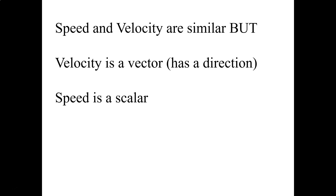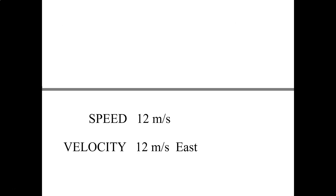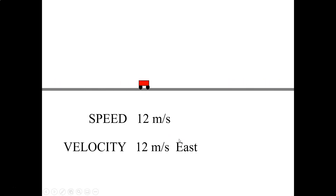The big difference: speed and velocity are similar, but velocity is a vector, meaning it has a direction, while speed is just a scalar. We've got a car moving at 12 meters per second. The vector form of that would be 12 meters per second east — that's the main difference we're going to be looking at.